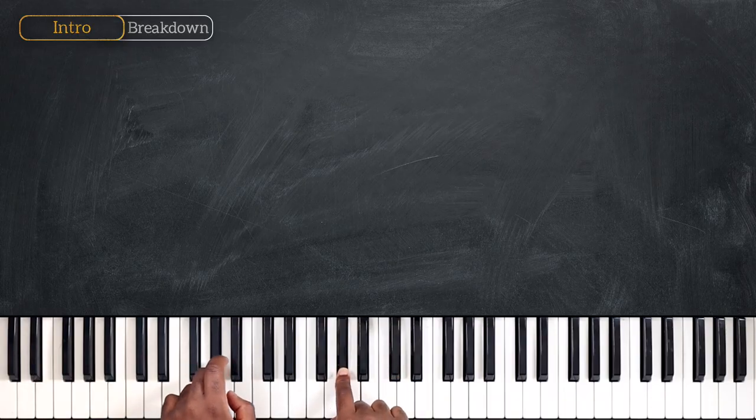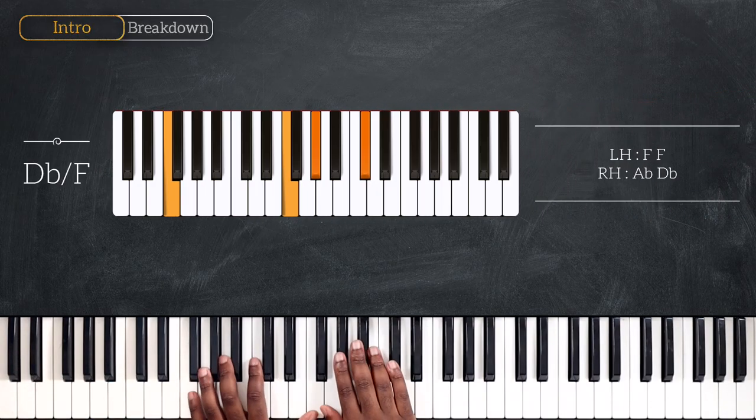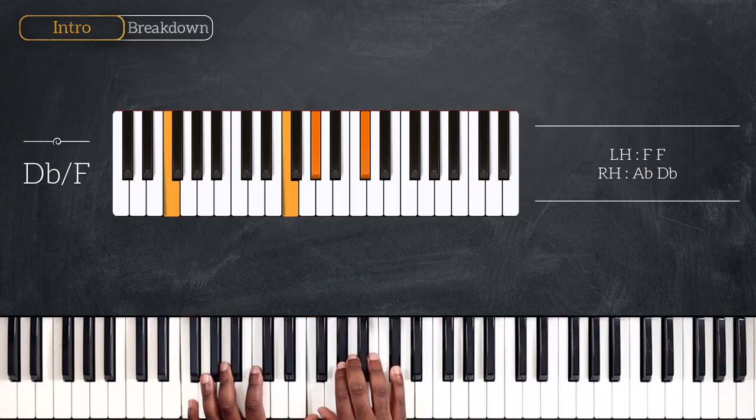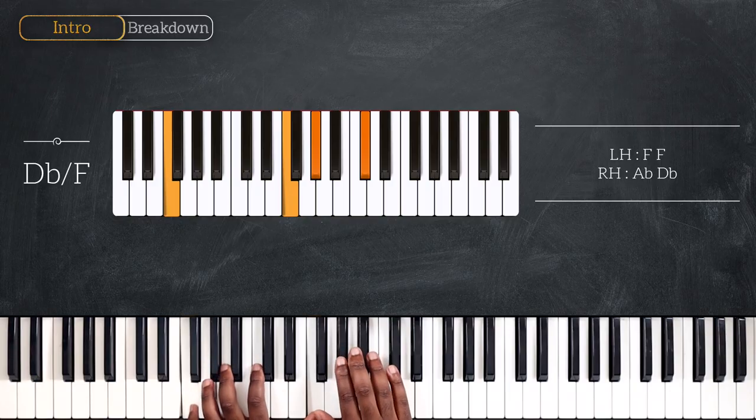And for this intro, we're starting with this chord. I'm playing Db with F on the bass. Octave F on the left. Ab and Db, right hand.